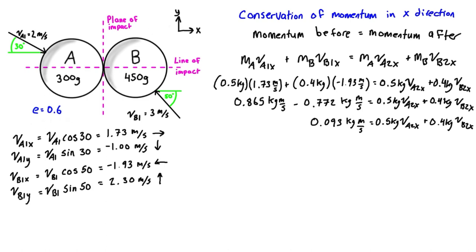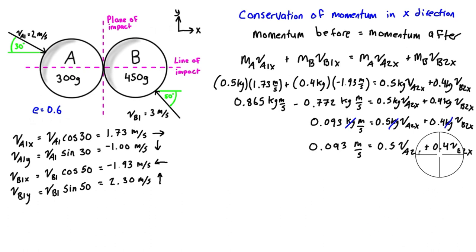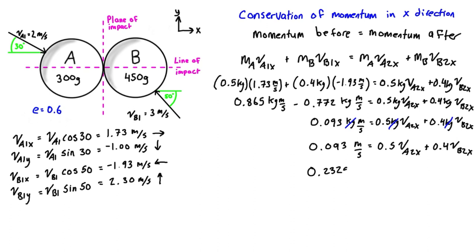We can divide out the kilograms to make things a little cleaner. Multiplying each term by 0.4 to isolate vb2x gives us: 0.2325 meters per second equals 1.25 va2x plus vb2x. We'll come back to this expression shortly for substitution.